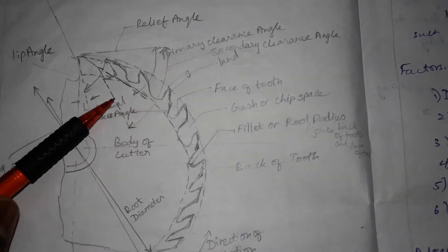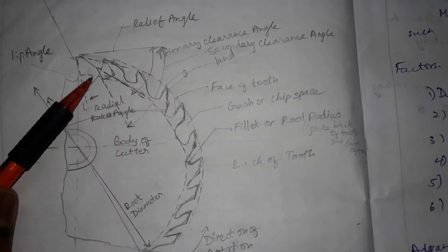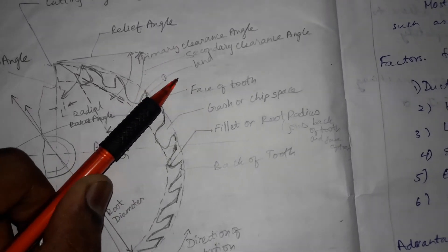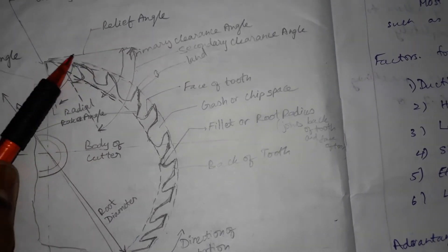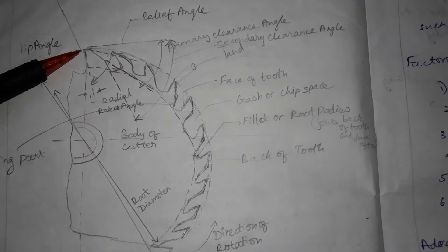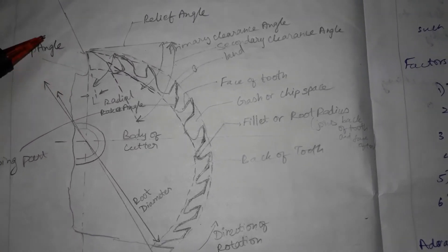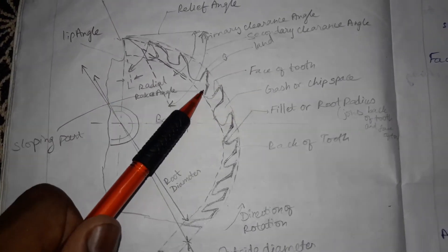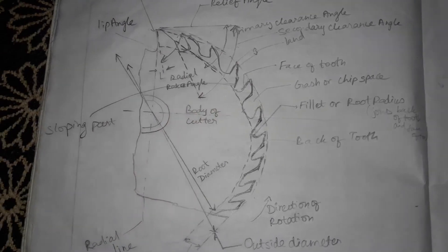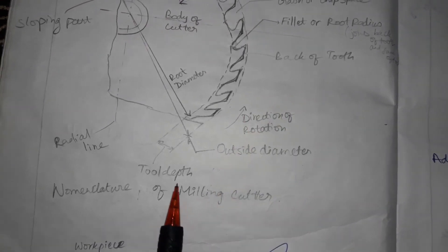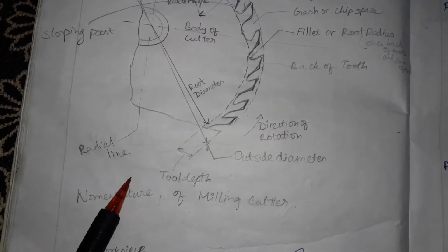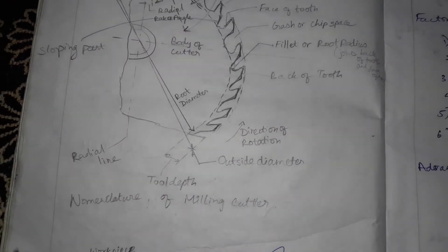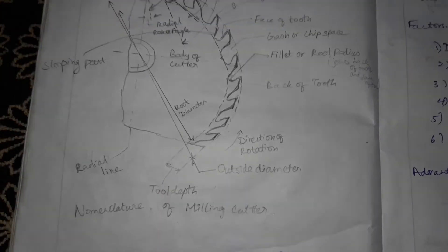This is the primary clearance angle and this is the secondary clearance angle. The top part of the cutter is called the land, and this is the relief angle. This is the lip angle — the length of the cutter teeth and lip angle — and this is the sloping part. This is the diameter, the radial line showing the direction of rotation, and the tool depth is the distance between the outer diameter and the root diameter or inside diameter. This is the nomenclature of the milling cutter.